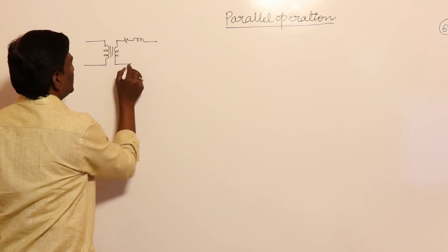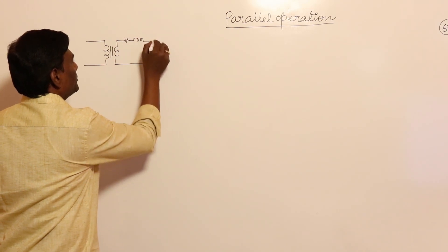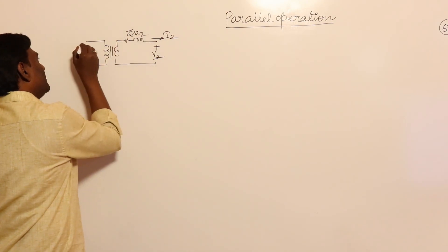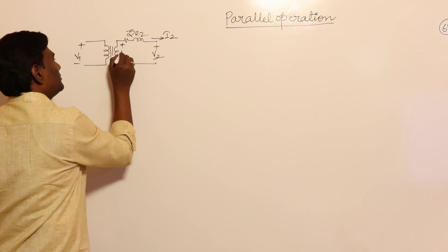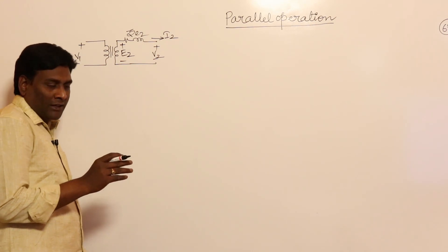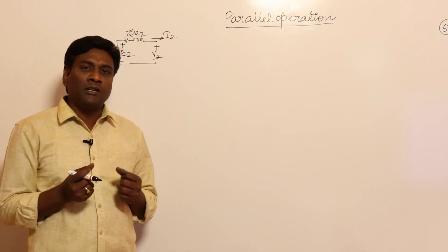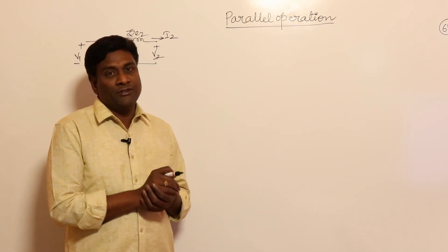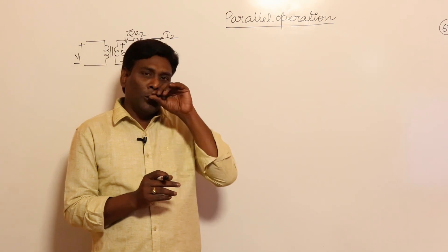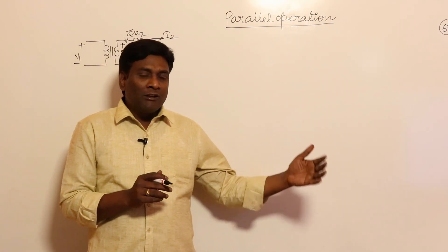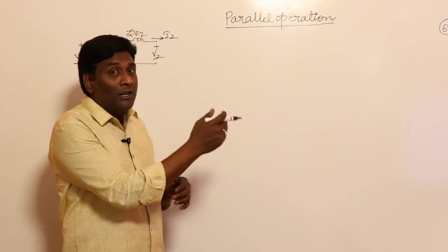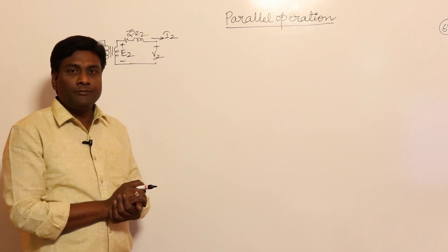In parallel operation, two transformers are connected in parallel. For example, consider a transformer circuit with leakage impedance, secondary voltage V2, current I2, and impedance Ze2. If you supply V1 on the primary, you get E2 on the secondary. In parallel operation, the load must be shared — for example, a 10 kVA transformer and a 5 kVA transformer give a total installed capacity of 15 kVA.